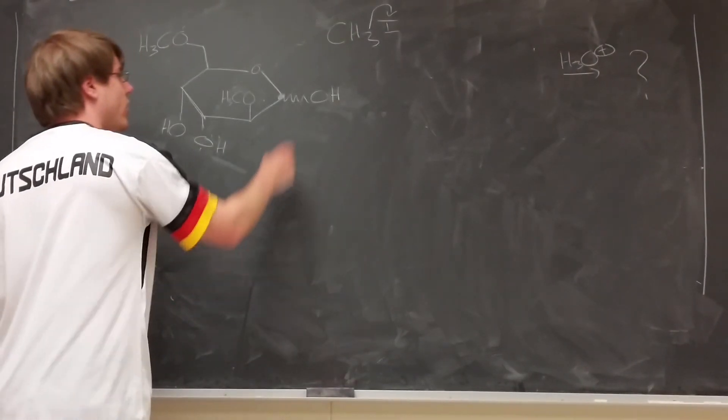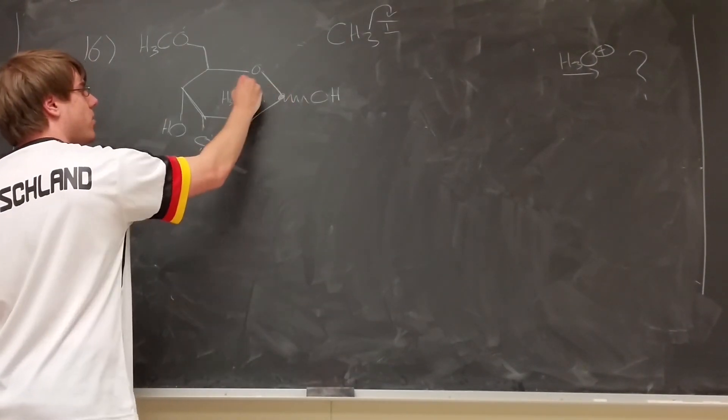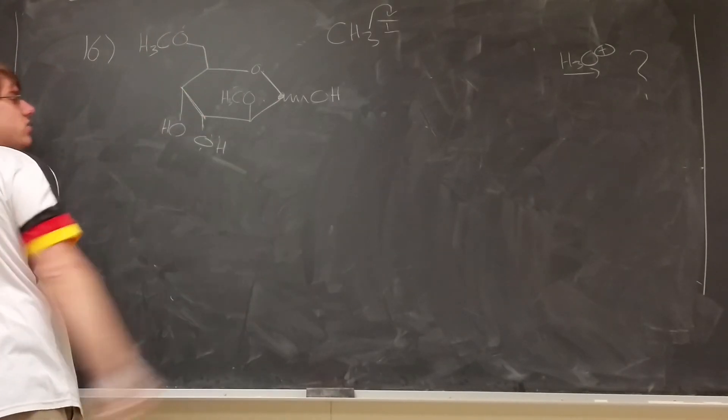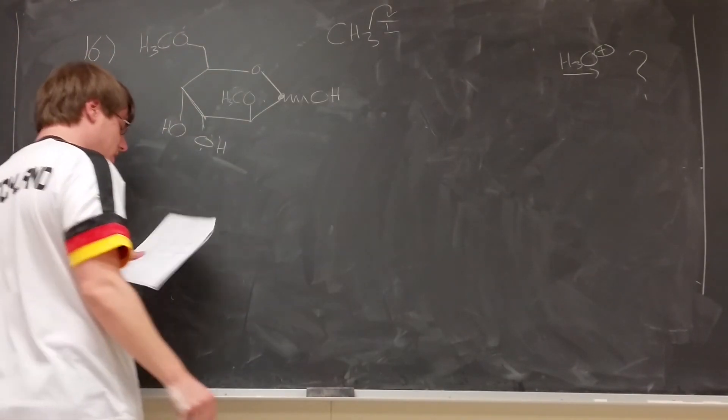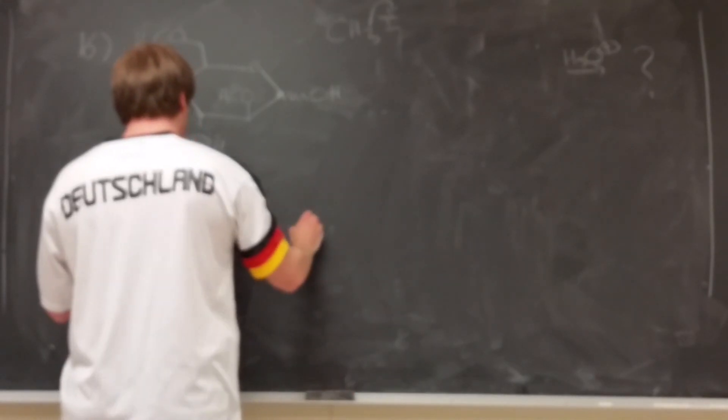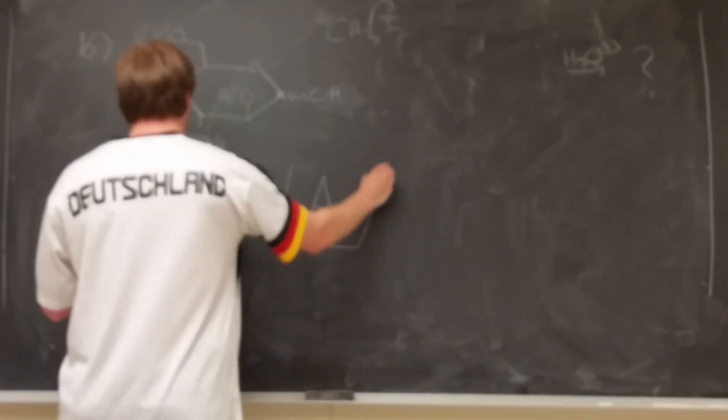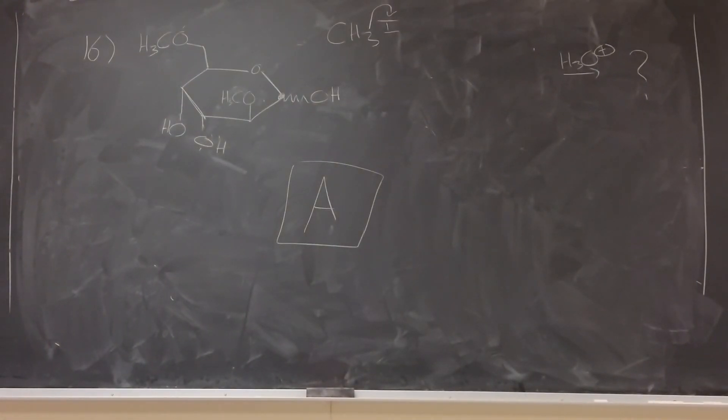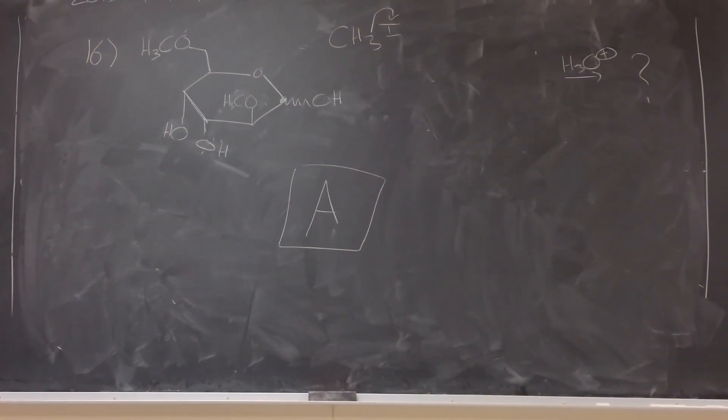So this right here, where you have squiggly line of OH, up OCH3, two down OHs, and then CH2OCH3 will be your answer. And if we look at the answer key, that was option A. So the answer to number 16 was choice A.